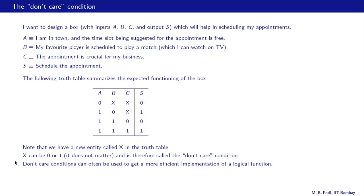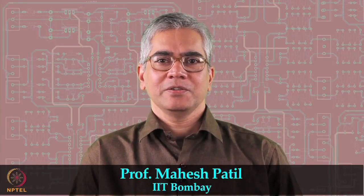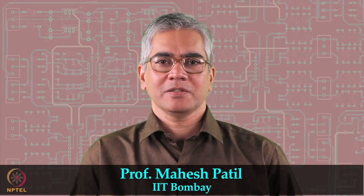To summarize: we have seen a new value for logical variables — the don't care condition, denoted X — which can be zero or one without changing the function value. Don't care conditions can often be used to get a more efficient implementation of a logical function. In summary, we have seen how a logical function can be expressed in the sum of products form or the product of sums form, and we looked at the don't care condition. In the next class we will look at how to minimize a logical function.